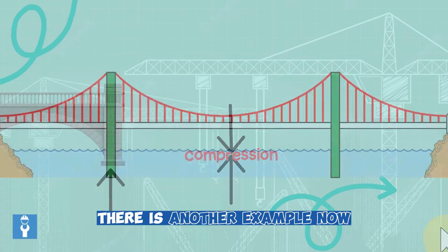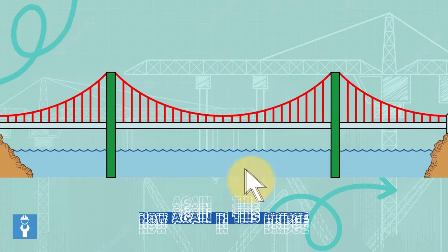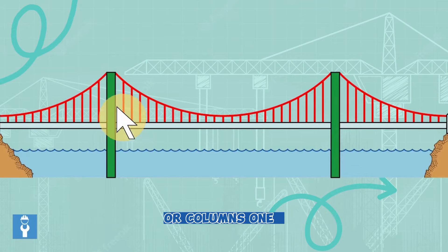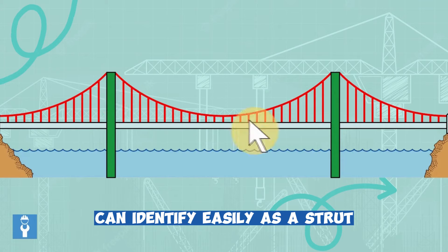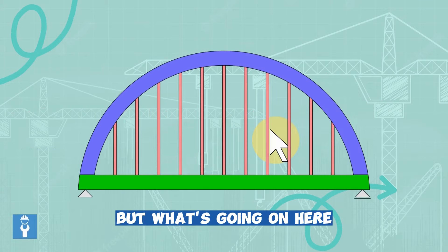Here is another example. Again in this bridge, these piers or columns are what you can easily identify as a strut.